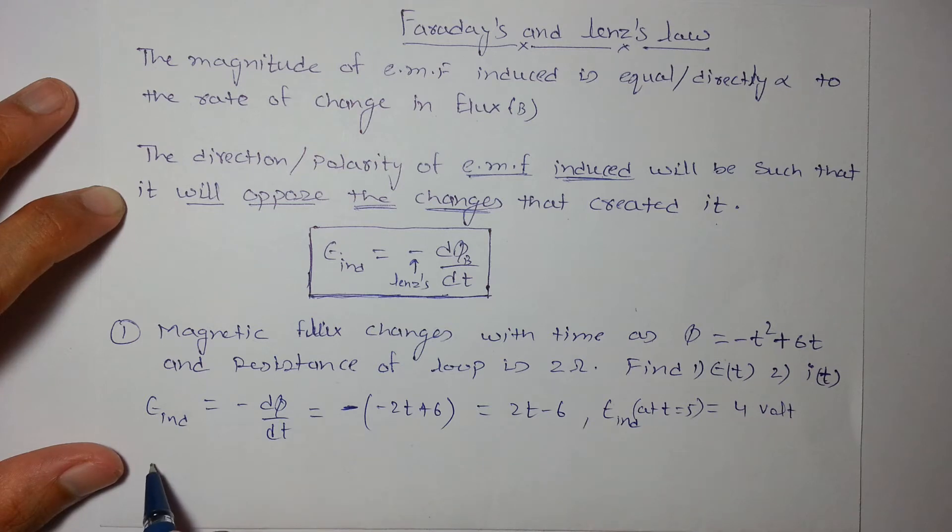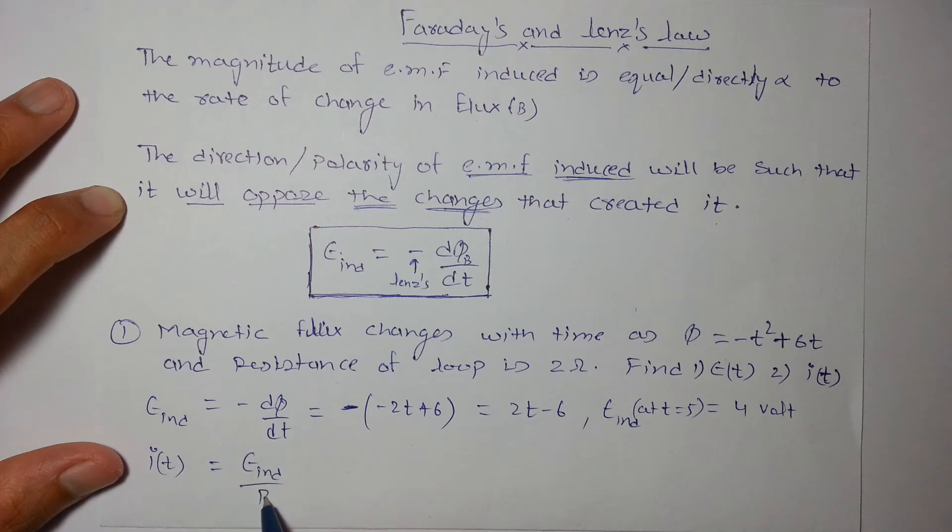So what about current as a function of time? As we know the resistance of the loop, EMF induced divided by the resistance, as there is no other power source or EMF source, so the total EMF will be the induced EMF. So induced EMF by resistance will give you the current. That will be (2t - 6)/2, and that is t - 3.